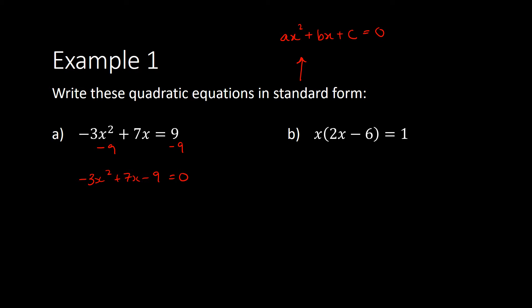For the second example, we have one extra step. We've got a bracket that we need to expand — we don't want that in standard form. Grab our x and multiply it into the brackets: x times 2x is 2x squared, and x times negative 6 is negative 6x, equal to 1. One more step — subtract 1 from both sides. We end up with 2x squared minus 6x minus 1 equals 0.